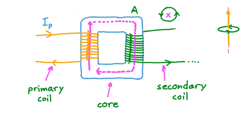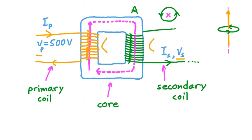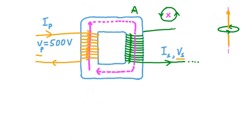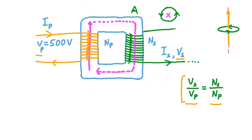We've said that the current going through the primary coil is Ip, and let's imagine we know the voltage of that current — we'll call that voltage Vp, and let's say it's 500 volts. Going over to the secondary coil, the current output is Is and the voltage output is Vs. The question is, what is that voltage? Believe it or not, we can solve for Vs by knowing Vp and also knowing the number of turns that each of the two coils — primary and secondary — make around the core. If we call the number of windings of the primary coil Np, and the number of turns of the secondary coil Ns, then we can write this equation: Vs divided by Vp is equal to Ns divided by Np. In other words, the ratio of the potential differences is equal to the ratio of the turns.